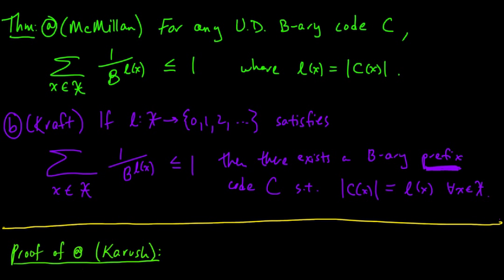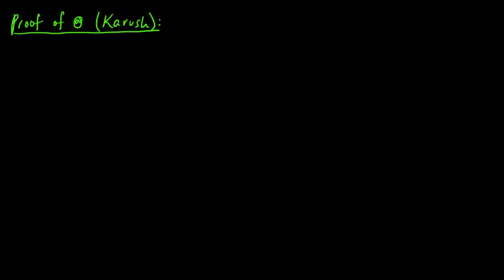Last time we stated the theorem of the Kraft-McMillan inequality, and in this video we're going to give a proof of part A of McMillan's theorem. The proof we're going to do is due to Jack Kruskal, and it's a marvelous little proof — one of those proofs that seems to just wander off into never-never land, but then it magically reappears behind you, taps you on the shoulder, and hands you the result. It's quite remarkable.